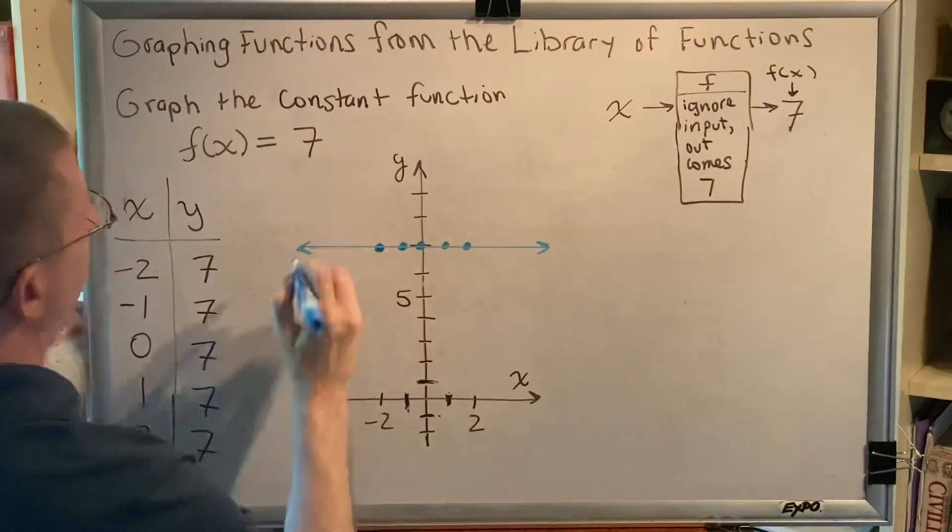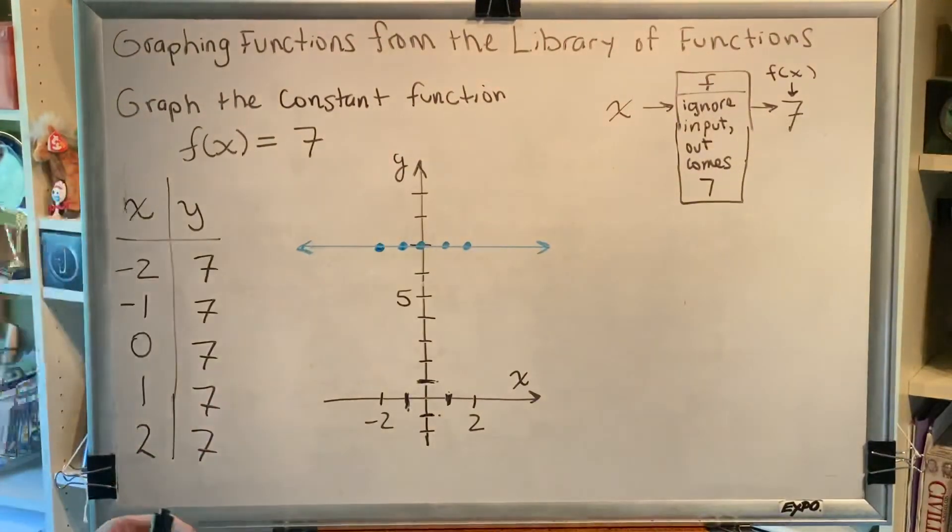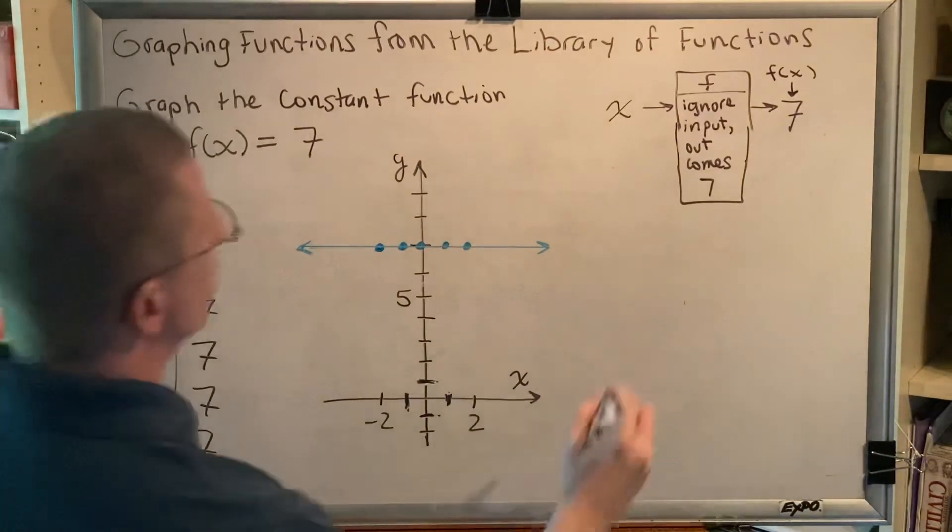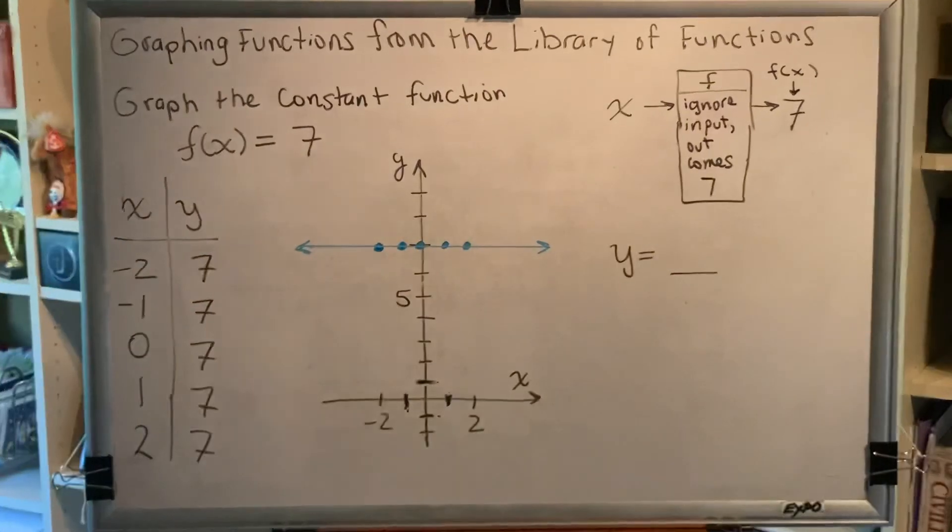There's one more thing I'd like to say before we call this particular video done. Clearly the constant function is a horizontal line. We've studied horizontal lines before. Horizontal lines have equations that are of the form y = some number. Do we observe that in this problem?